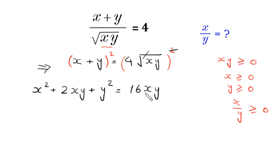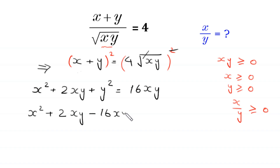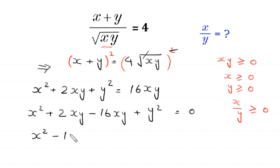Now we move the 16xy term to the left side. The equation becomes x squared plus 2xy minus 16xy plus y squared equals 0. Combining like terms, 2xy minus 16xy gives negative 14xy, so we have x squared minus 14xy plus y squared equals 0.